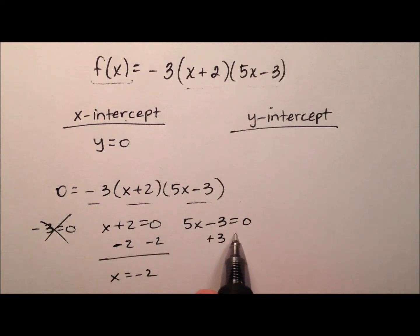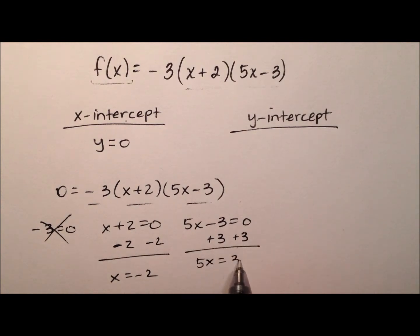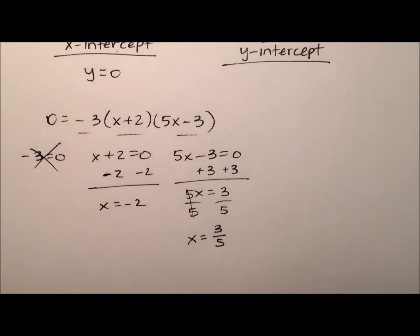And for the third one, we'll start by adding 3 to both sides. We'll get 5x equals 3. Then we can finish this off by dividing by 5, and x will be 3 fifths.